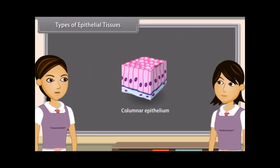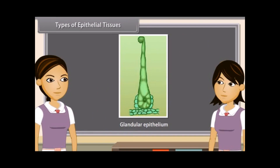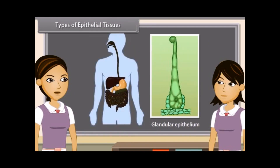Columnar epithelium consists of cells which are pillar-like in appearance because they are taller than broader. Their nuclei are at the base. It is found in the lining of stomach, small intestine, colon, gallbladder and oviducts forming mucous membrane. The columnar epithelium is sometimes modified to form glands which secrete certain chemicals and it is thus converted into glandular epithelium. It is found in the mucous membrane of stomach, sweat and oil glands.